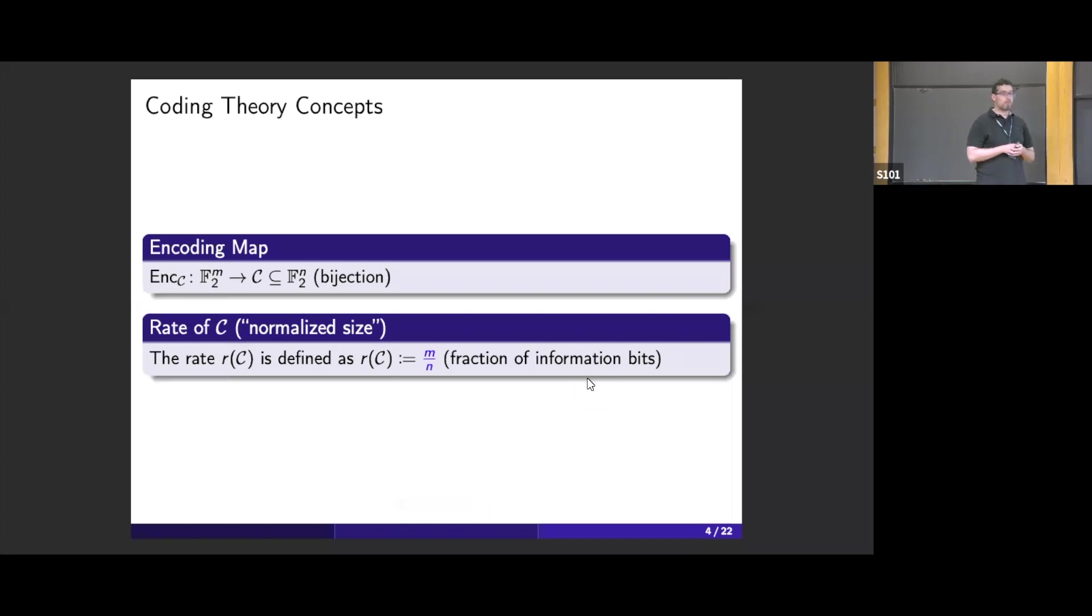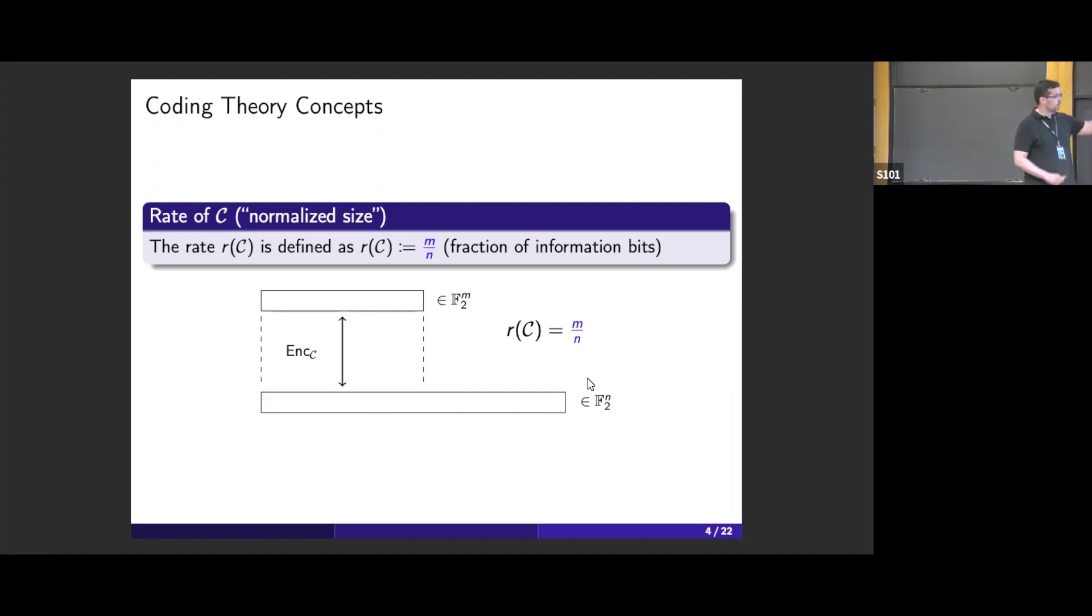The first property we can talk about is the rate of the code, which captures some notion of size of the code. The rate is defined as this ratio - we are mapping a message of n bits into some word of N bits. So the rate is just the ratio of n by N, which is the fraction of information bits. We would like the rate to be as large as possible. We would like to introduce as little redundancy in our codes as possible.